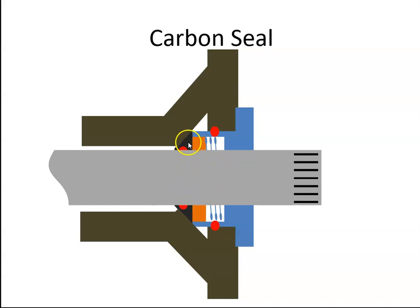As the shaft rotates, this mating ring will rotate with it. This part will remain stationary, but the carbon will be in contact with this mating ring at all times.